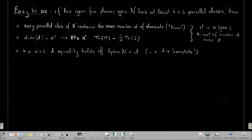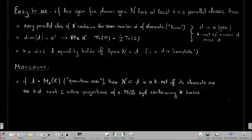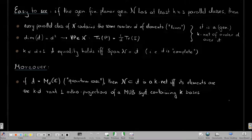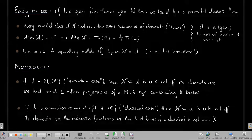The number of parallel classes k must be at most d plus one, with equality if and only if the projections linearly span the full algebra — that is completeness. In the quantum case (d-by-d matrices) you recover mutually unbiased bases, and in the commutative case you recover classical finite k-nets. So we now have a common framework.